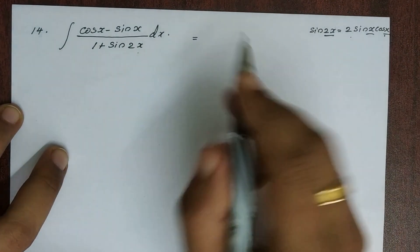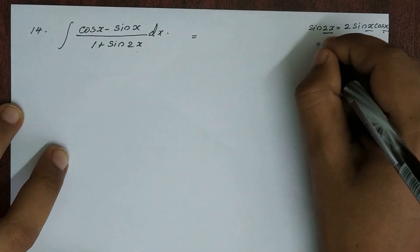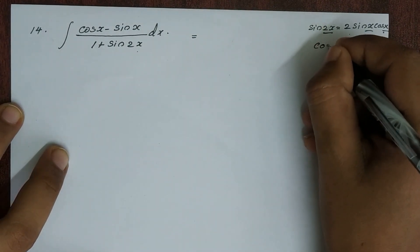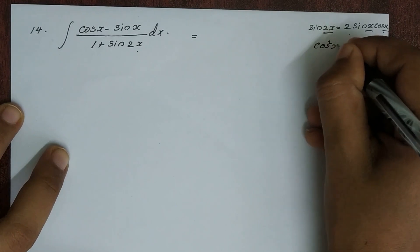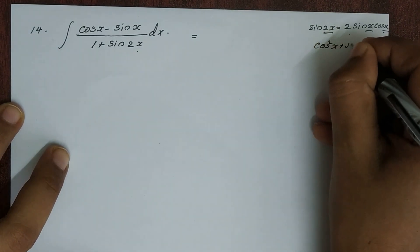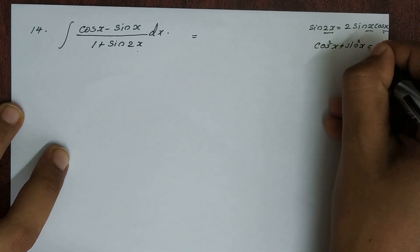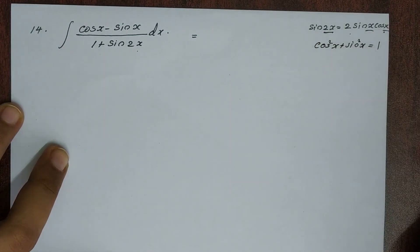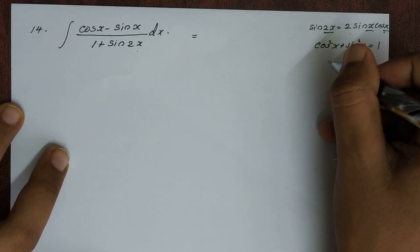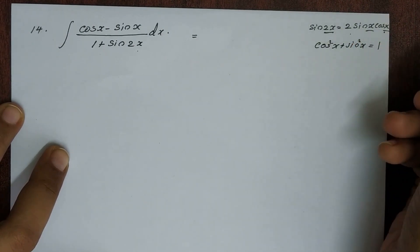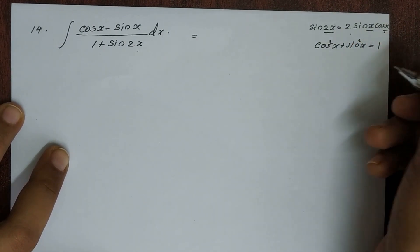We also need: sin²x plus cos²x is equal to 1.